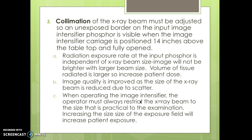Collimation of the x-ray beam must be adjusted so that an unexposed border on the input image intensifier phosphor is visible when the image intensifier carriage is positioned 14 inches above the tabletop and fully open. Radiation exposure rate at the input phosphor is independent of the x-ray beam size — the image will not be brighter with a larger beam size, but the volume of tissue radiated is larger, which increases patient dose. Image quality is improved as the beam size is reduced due to less scatter. The operator must always restrict the x-ray beam to the size practical to the examination.